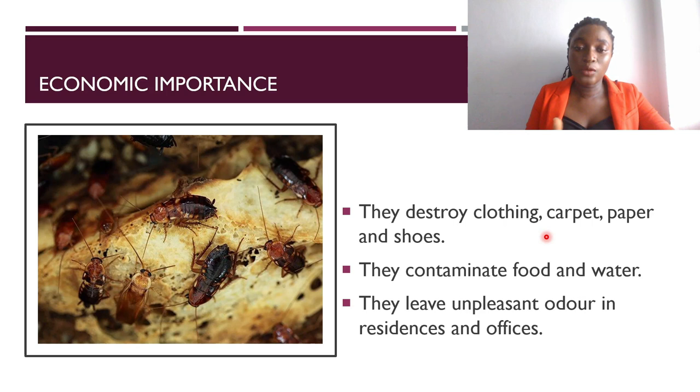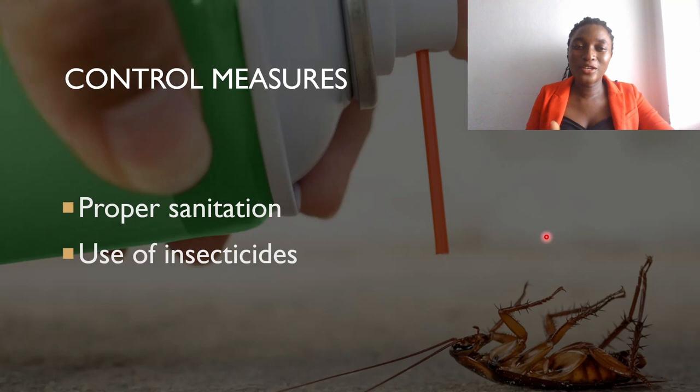Cockroaches contaminate food and water and produce an unpleasant odor in residences and offices. To control their spread, we can use proper sanitation — cleaning the environment, covering bins, clearing food after eating, and noticing areas where they dwell to put traps and baits. You can also use insecticides or any chemicals specifically used for killing or treating the spread of these insects.